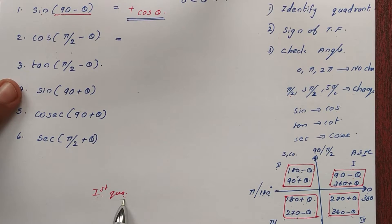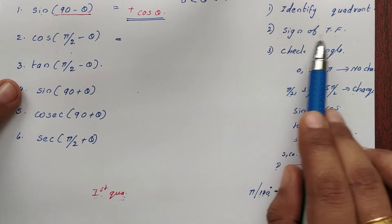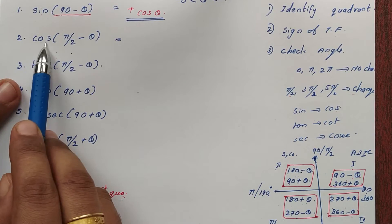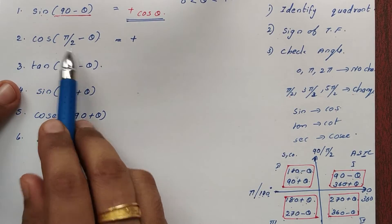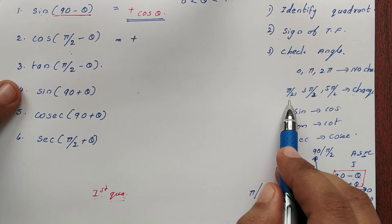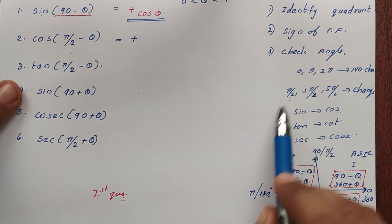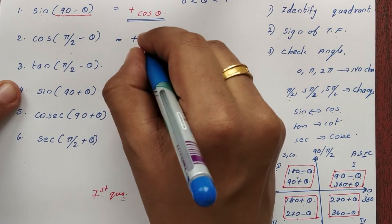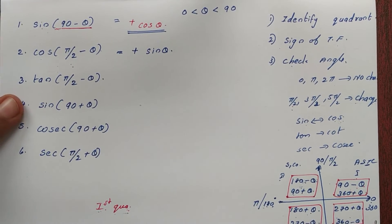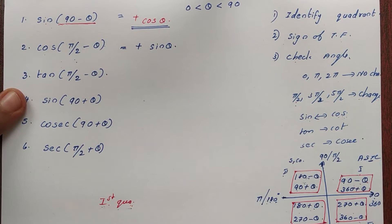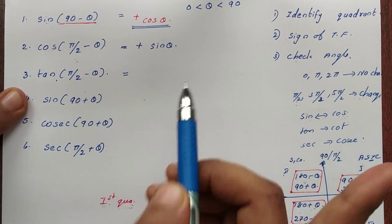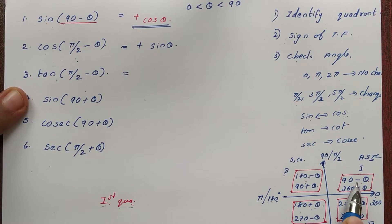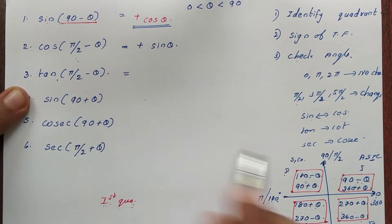Now for cos(pi by 2 minus theta): the first step is to identify the quadrant — pi by 2 minus theta is the first quadrant. The second step is to check the sign; the first quadrant is positive. The third step is to check the angle: the angle is pi by 2, so cos changes to sin. The result is positive sin theta.